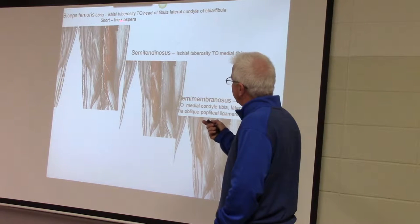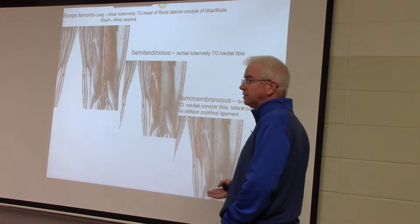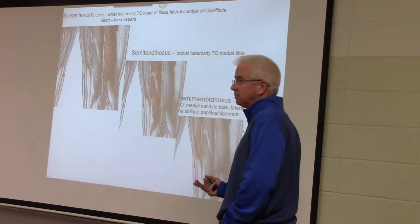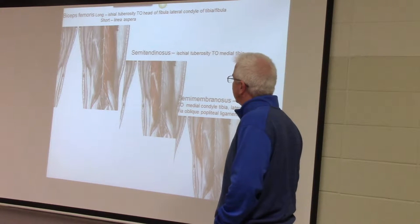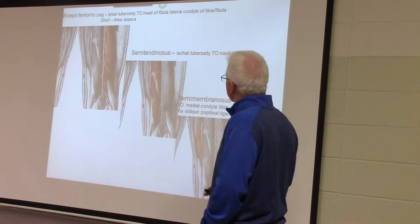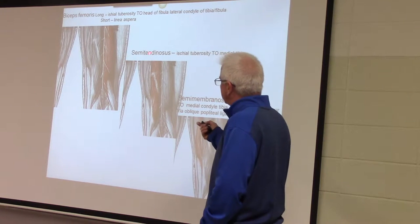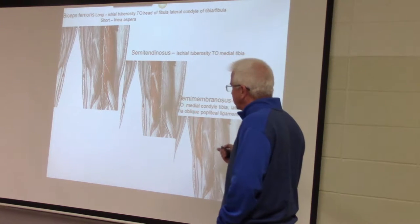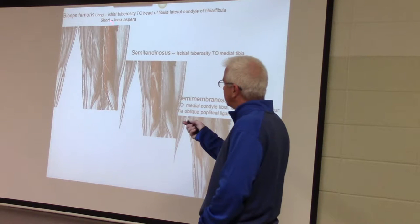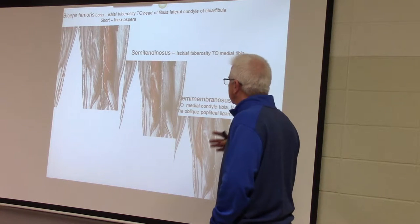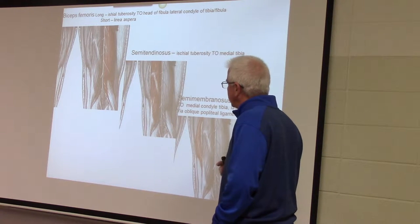The short head has its attachment to the linea aspera — you're getting a long list of muscles that attach to the linea aspera. The semitendinosus and semimembranosus are the muscles on the medial side, while the biceps femoris is the muscle on the lateral side.